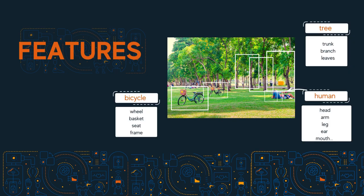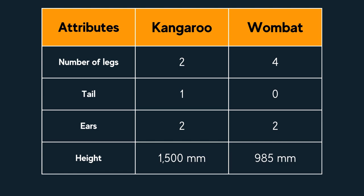There could be thousands of possible features in an image, but we need to select the features that are most useful or meaningful. For example, if looking at images of a kangaroo and wombat, we're considering attributes that describe the animal's appearance, such as number of legs, the presence or not of a tail, ears, height and weight. In our table here, we have some mammals and features associated with each.